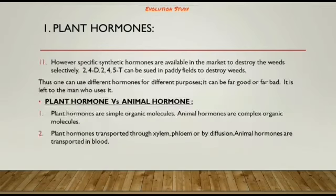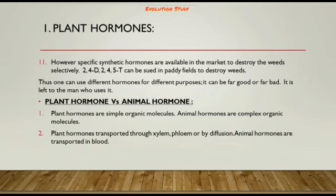Another use that can be commercially exploited is the use of GA and other hormones in inducing flowering in unseasonal periods. Specific synthetic hormones are also available to destroy weeds selectively — 2,4-D and 2,4,5-T can be used in paddy fields to destroy weeds. Thus, different hormones can be used for different purposes, for good or bad, depending on the user.